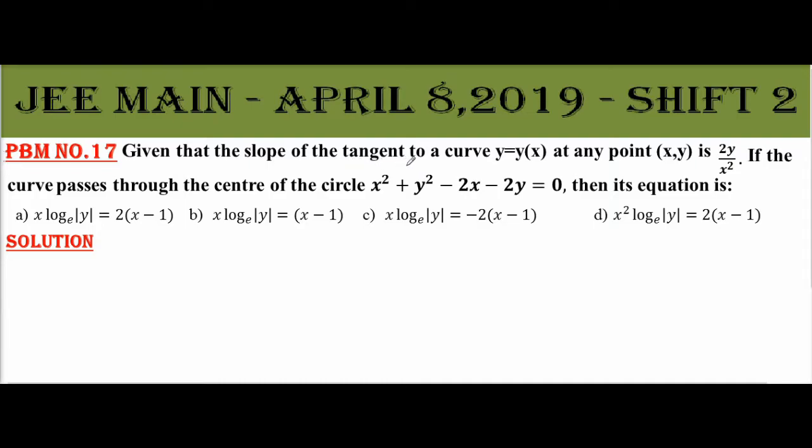Given that the slope of the tangent to the curve y equals y of x at any point xy is 2y by x square. The slope of tangent dy by dx equals 2y by x square.